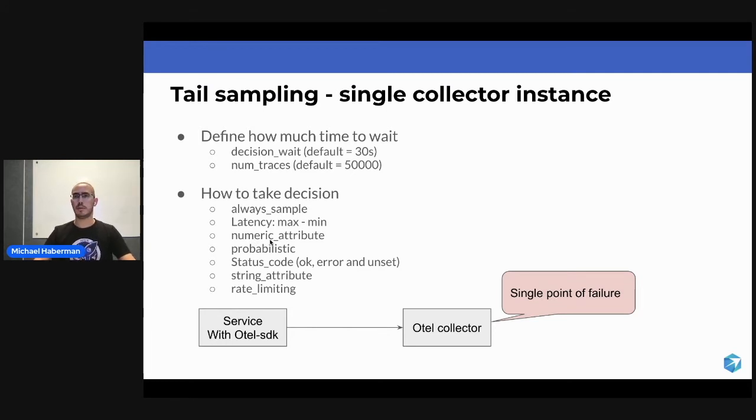If you're looking for a status code over or equal to 500 - basically any HTTP code that has failed - I want to collect it. Probability is just a ratio: one percent, ten percent, fifty percent, whatever you want.